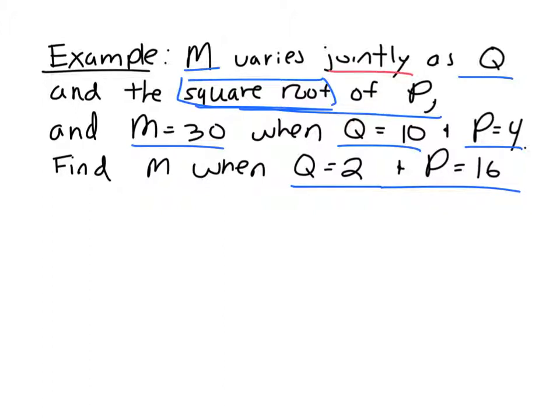So it varies jointly. That's the hint that we need to be using this equation: M equals k times Q and P. Oops, I meant to write P, not R. Q times P. Another thing that's a little different about this question is that instead of using z, x, and y, now we're using these other variables. It's fine, don't let it scare you. It's M, so M is varying jointly.